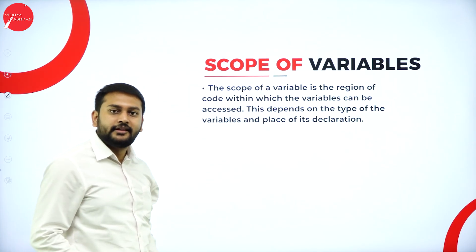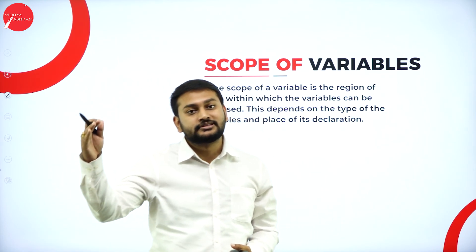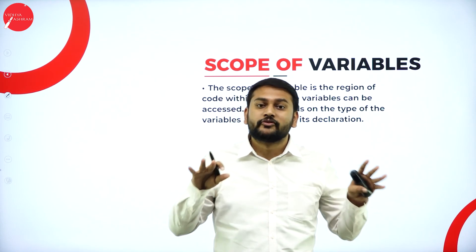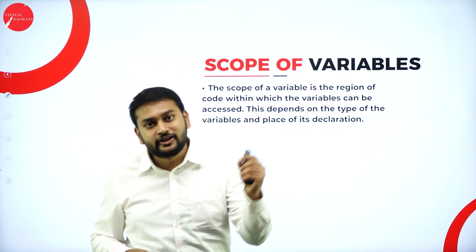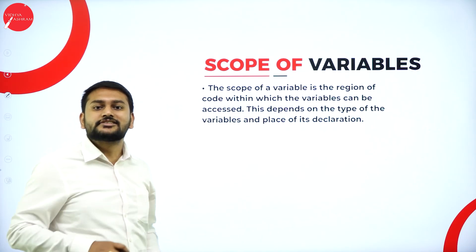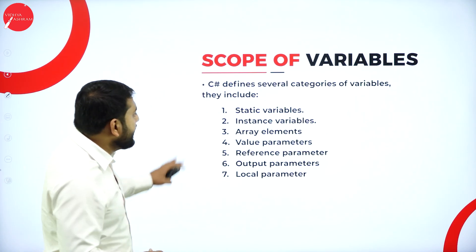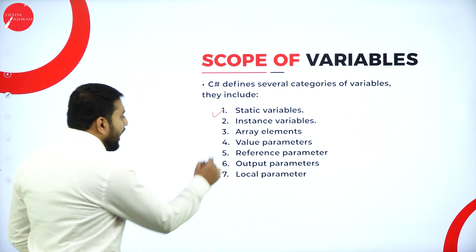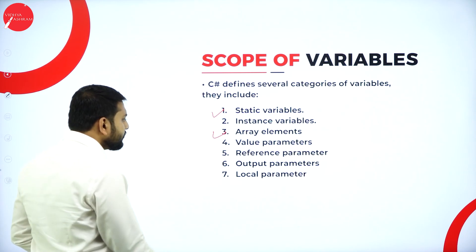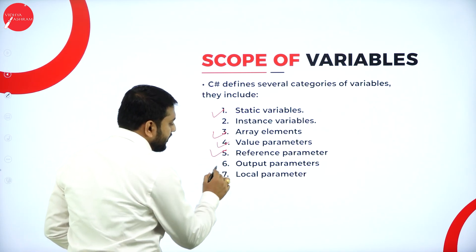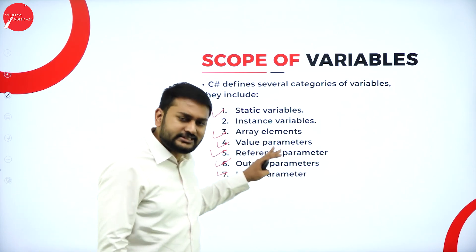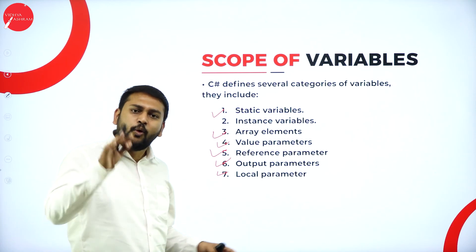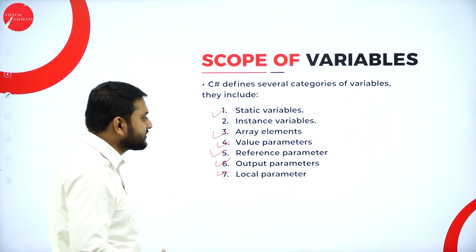Going forward to the next one — scope of the variable. Scope of the variable means the visibility of the variables — what is the privilege that the variable has got. When we discuss scope, we come across different types of variables with different scopes: static variable, instance variable, array variable, value parameter, reference parameter, output parameter, and local parameter. These are the different categories of variables in C#.